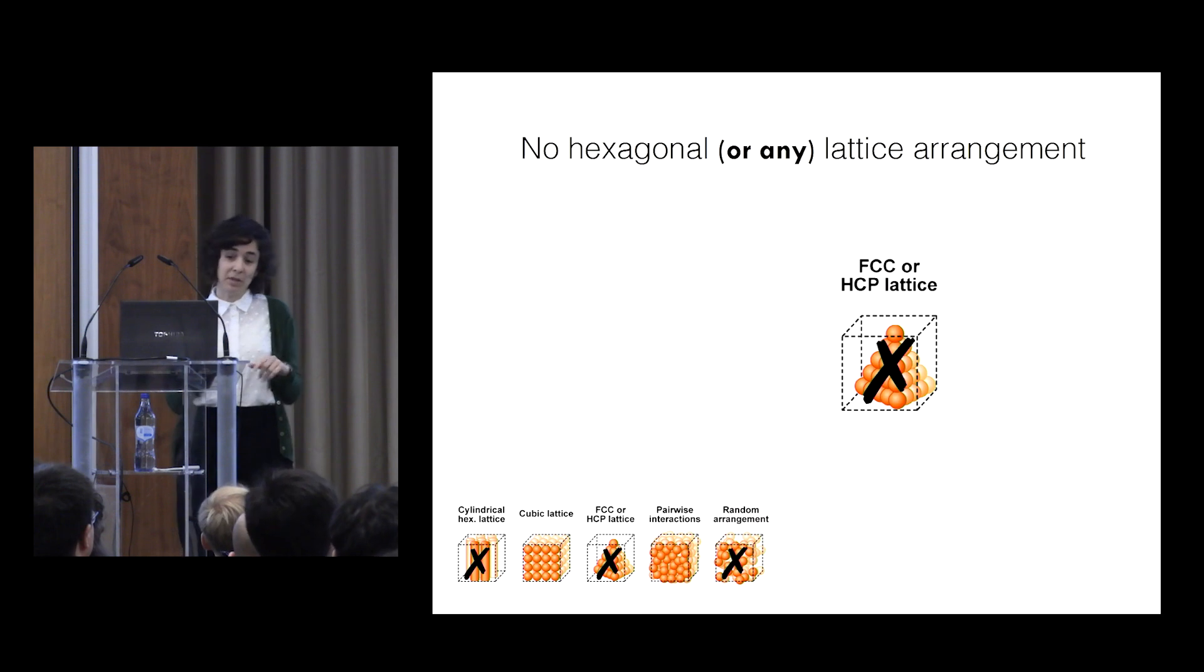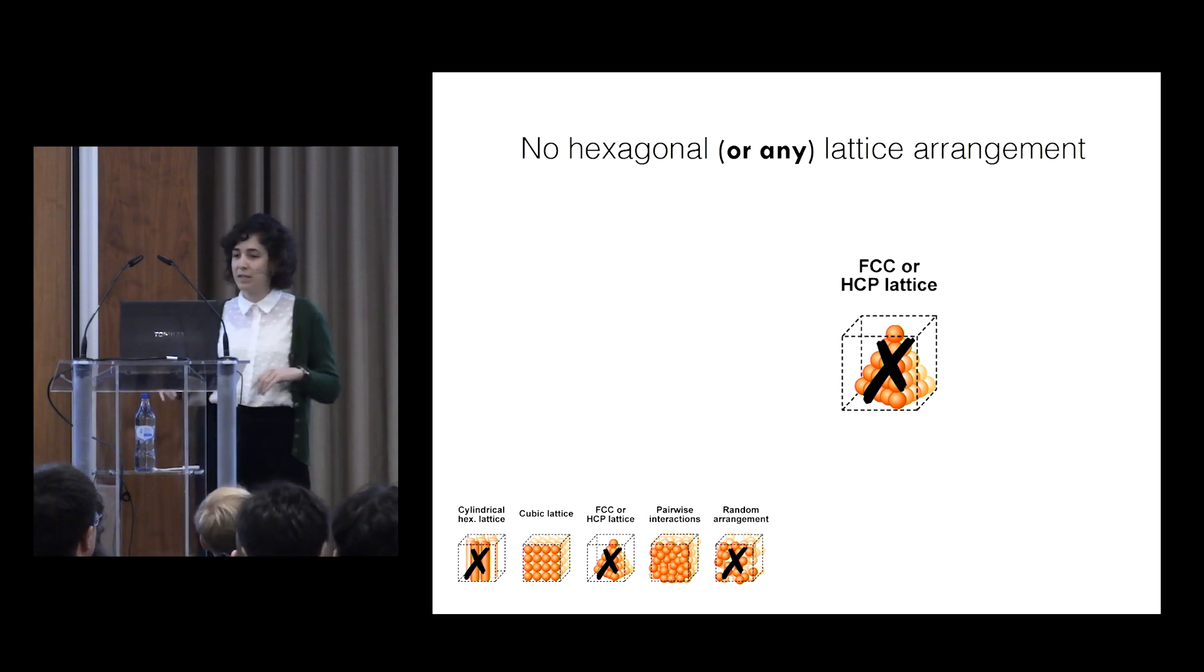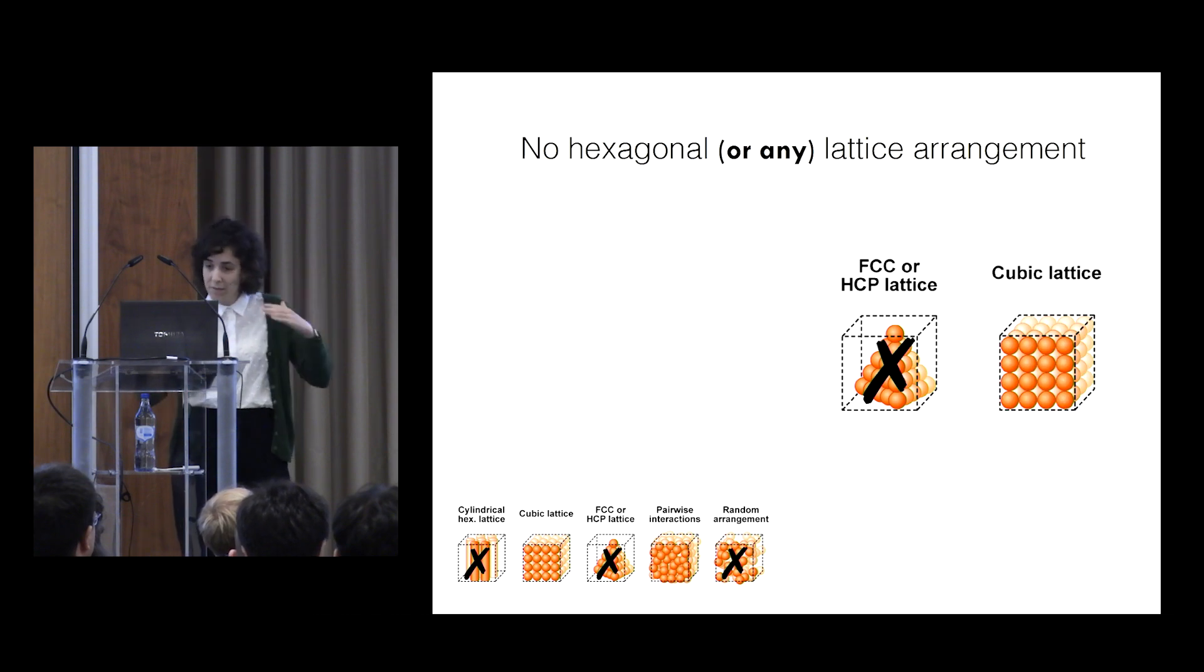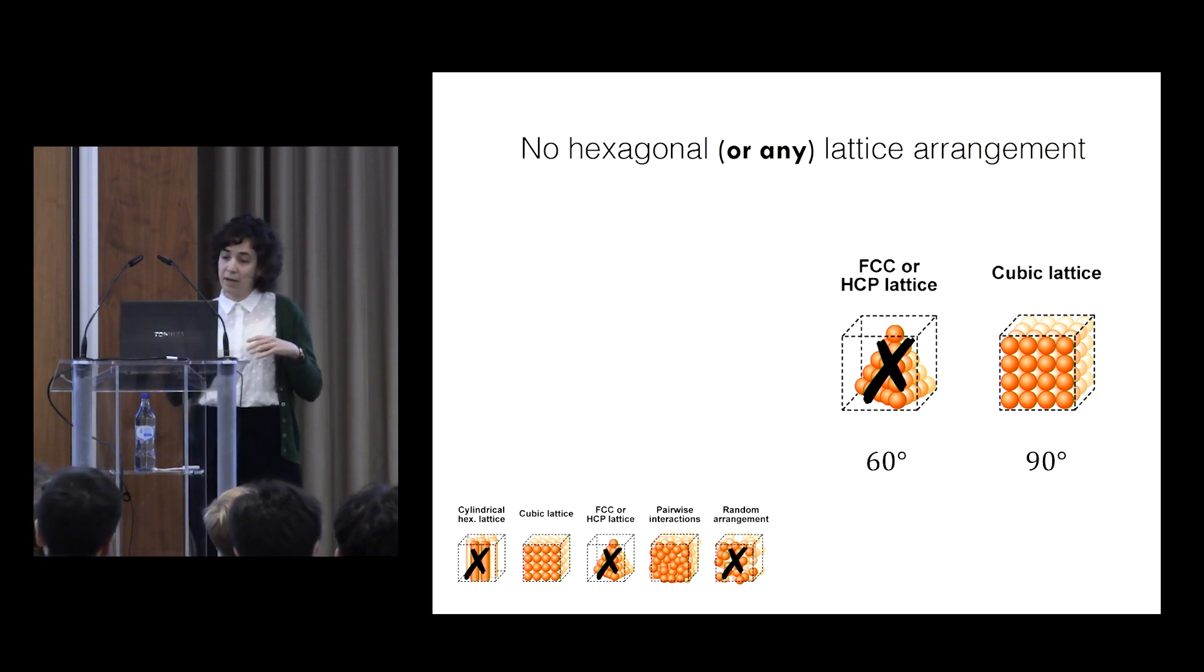But now you could argue that maybe they're not arranged in a hexagonal lattice, but maybe they're arranged in a different type of lattice. For example, just as an example, a cubic lattice. So we know in lattices, in global order, that we have a bias of local angles.